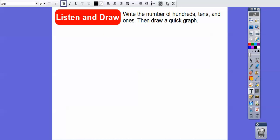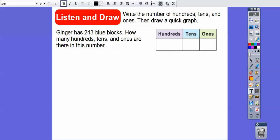So write the number of hundreds, tens, and ones and draw a quick graph. Ginger has 243 blue blocks. How many hundreds, tens, and ones are there in this digit?